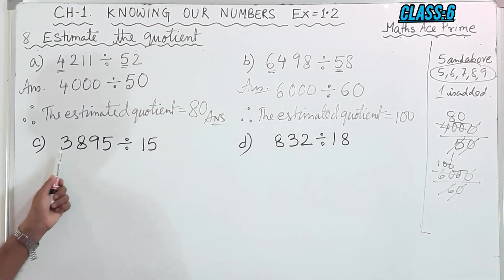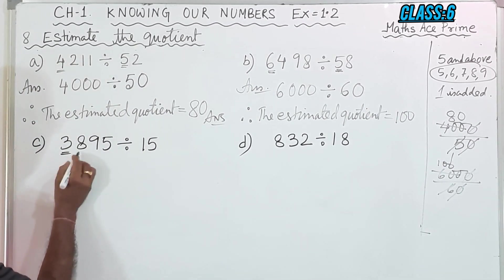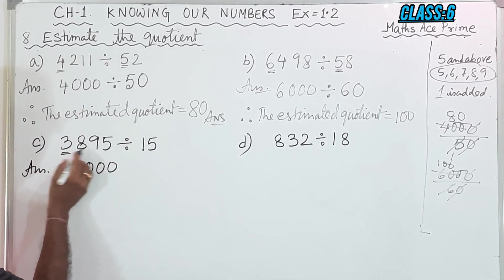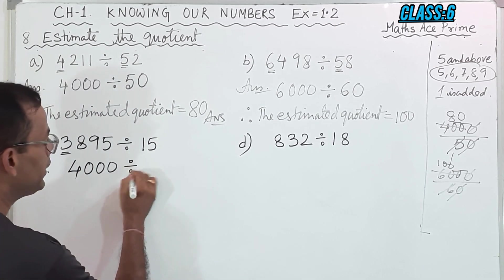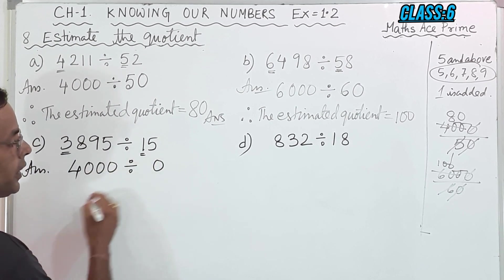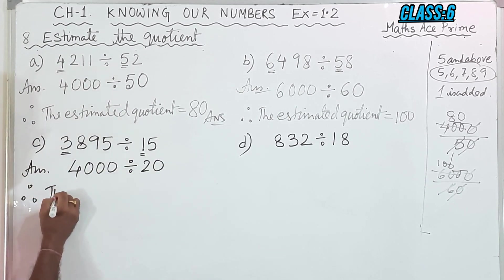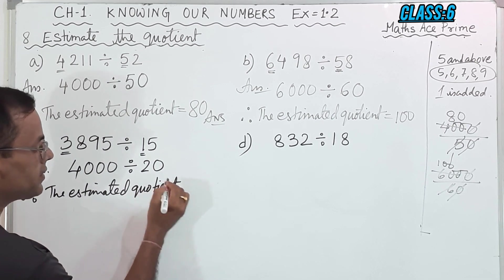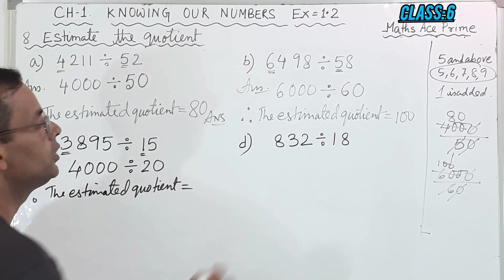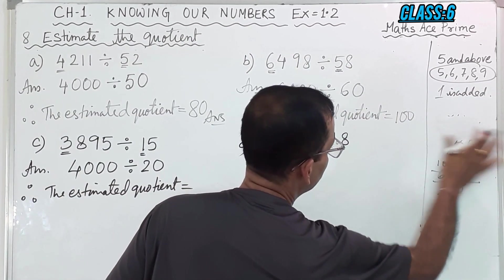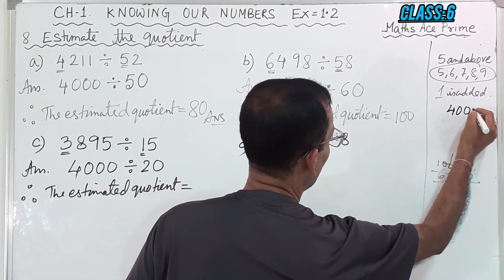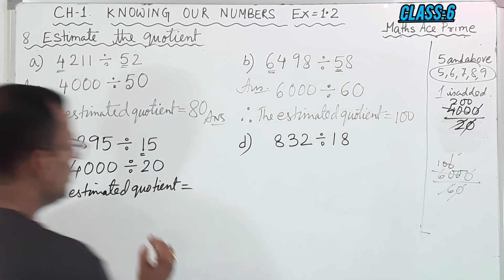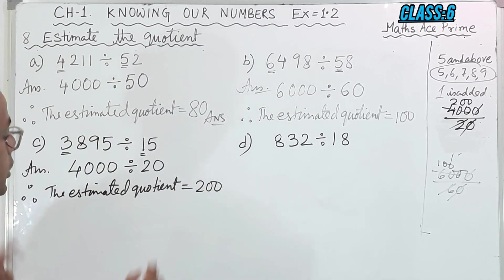Now question number C: 3,895 divided by 15. We will round off here. The next digit is 8, so this 3 will become 4, giving 4,000. Divided by — if I round off here, it is 5, so we put 0 and 1 becomes 2, giving 20. Therefore the estimated quotient equals 4,000 divided by 20. Cancel the zeros: 2 into 4 is 8, so you get 200. And this is the answer.